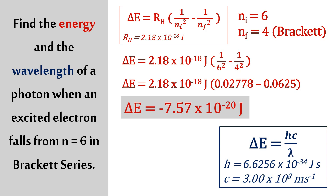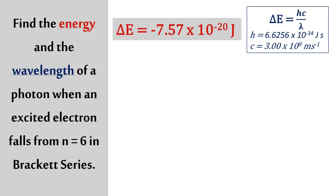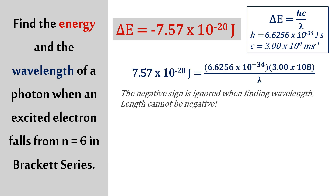Next, we can use the information about delta E to find the wavelength by using the formula in the blue box. We're going to use both pieces of information to find the wavelength of the photon — we've got the energy of the photon, delta E, from just now. We substitute the value, and remember, the negative sign needs to be ignored because we're trying to find wavelength — length cannot be a negative value.